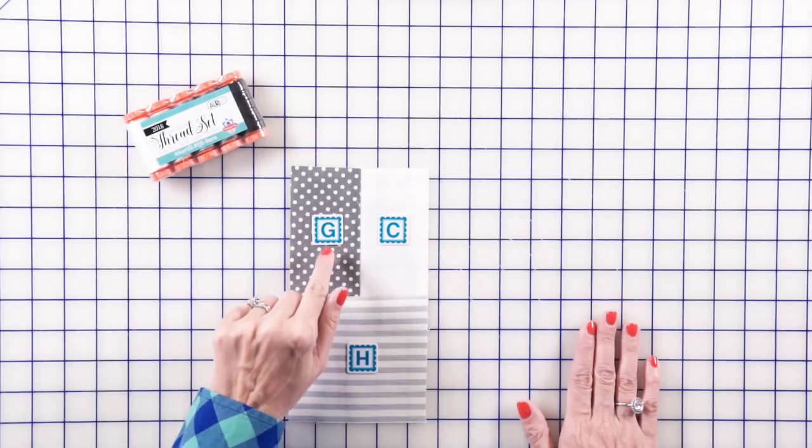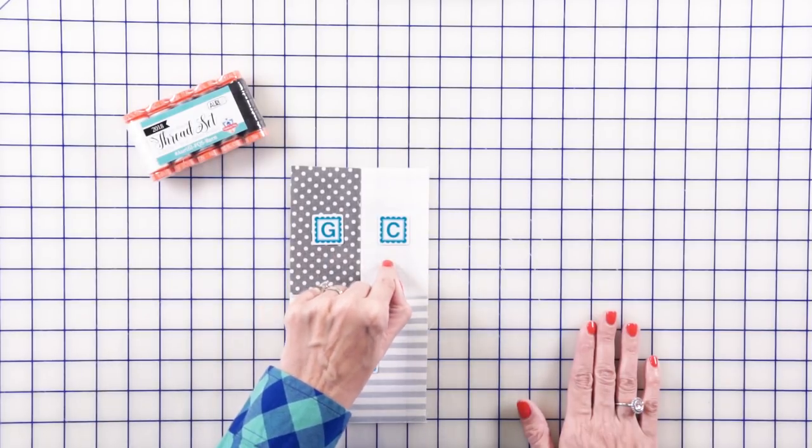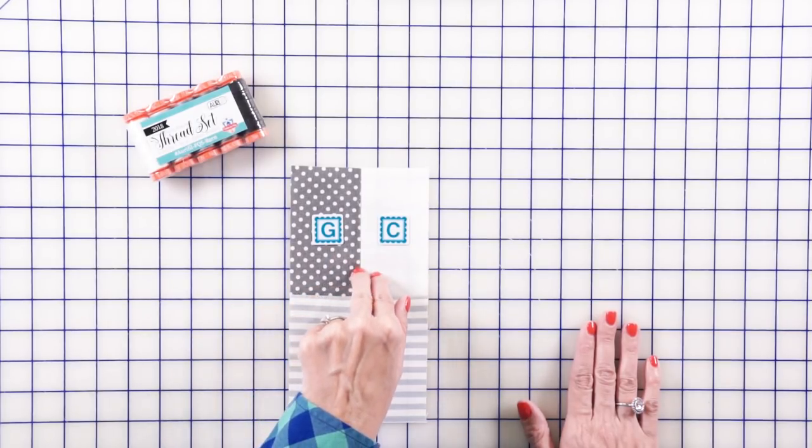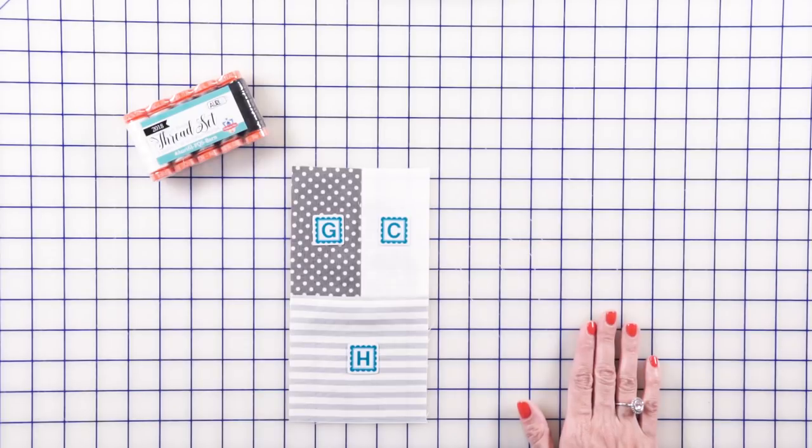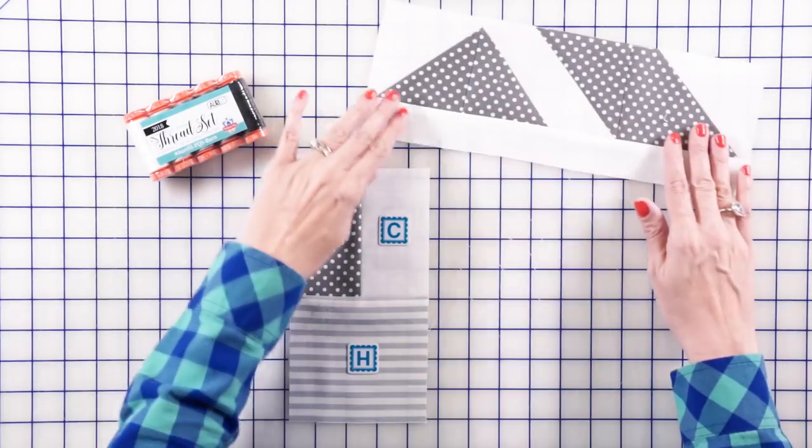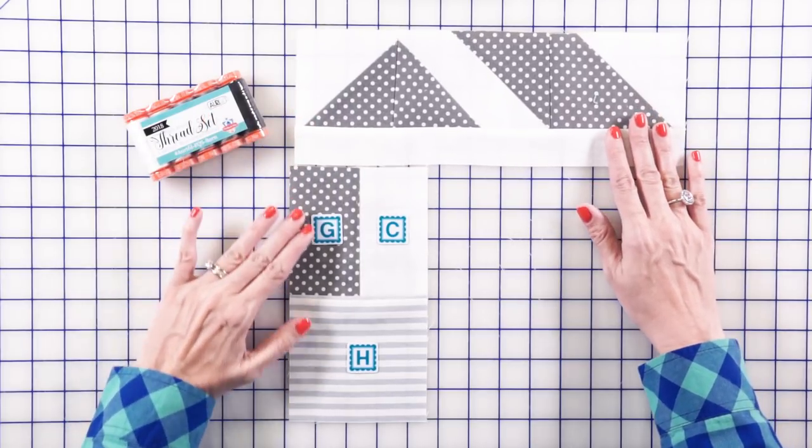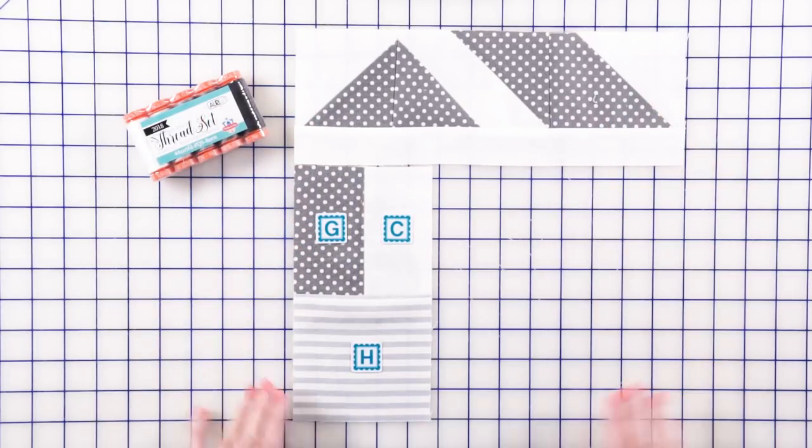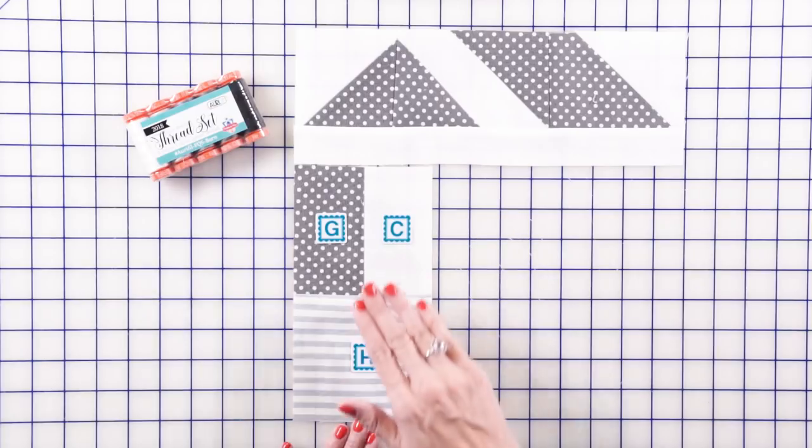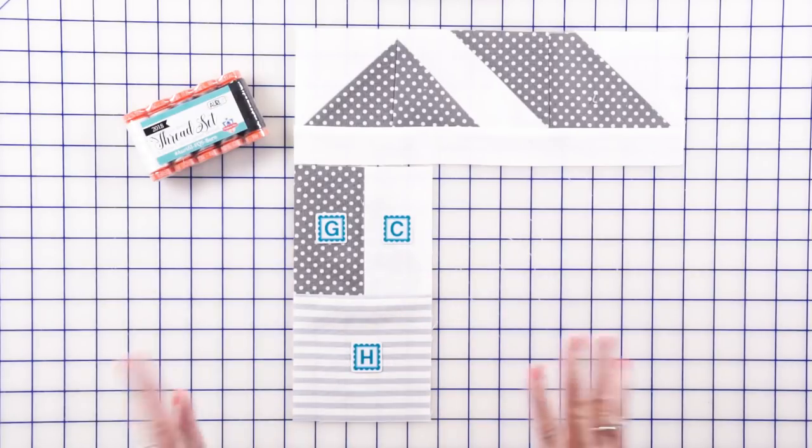So now we're going to jump into the left part of your barn. Super simple. Put together a fabric G and fabric C rectangle, press, then add your fabric H. And this is your left barn unit. Now, what I wanted to show everybody is when you're making this each month, the roof and the left barn unit will be the same with different fabrics.